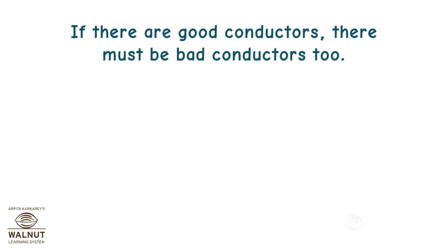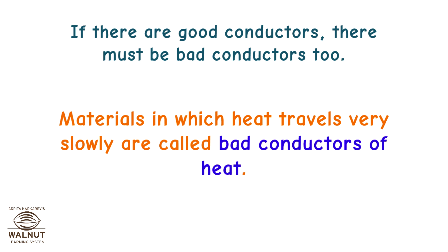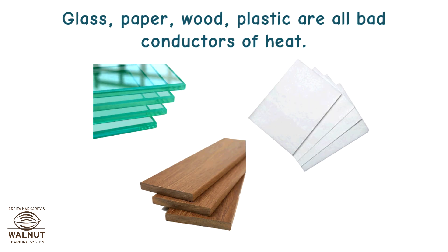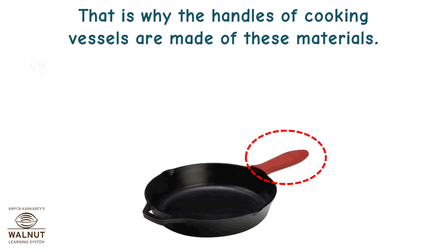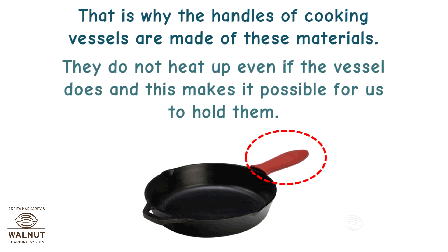If there are good conductors, there must be bad conductors too. Materials in which heat travels very slowly are called bad conductors of heat. Glass, paper, wood, and plastic are all bad conductors of heat. That is why the handles of cooking vessels are made of these materials — they do not heat up even if the vessel does, and this makes it possible for us to hold them.